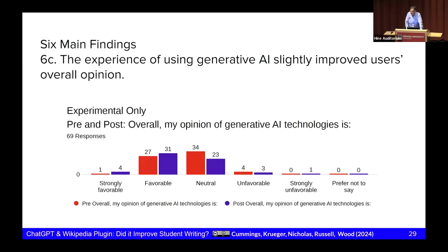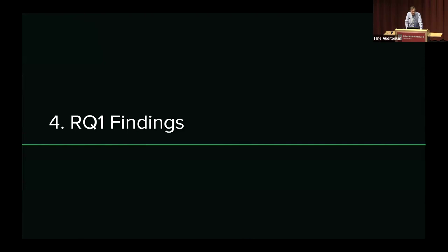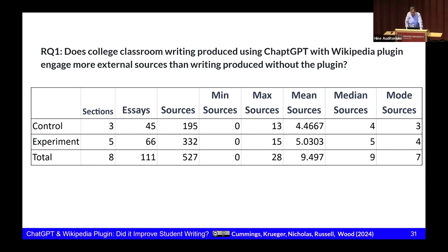Now we look at the findings from the experiment itself. On the question of whether students using ChatGPT with Wikipedia plugin engaged more sources — the answer is a clear yes. The most common number in the control group was three sources; the most common number in the experiment group was four. That increase of one is consistent with the median and the mean. In general, writers who used ChatGPT with Wikipedia plugin incorporated more sources in their assignment.